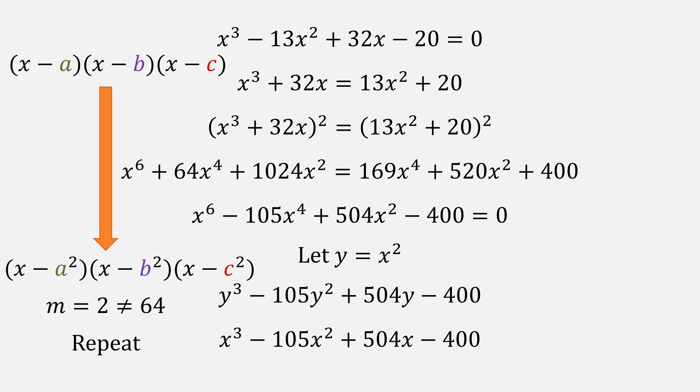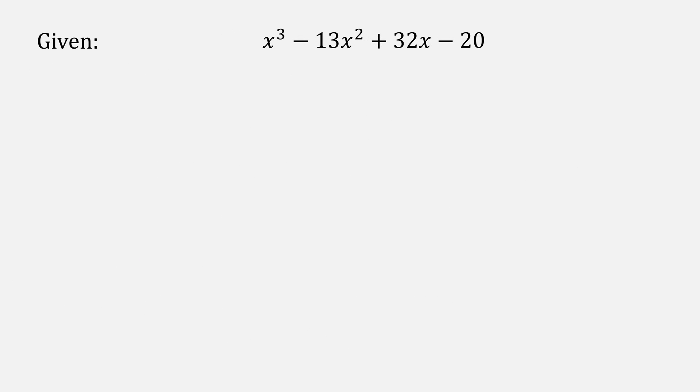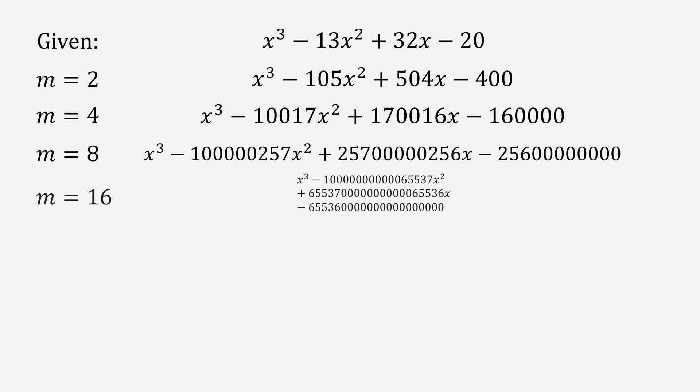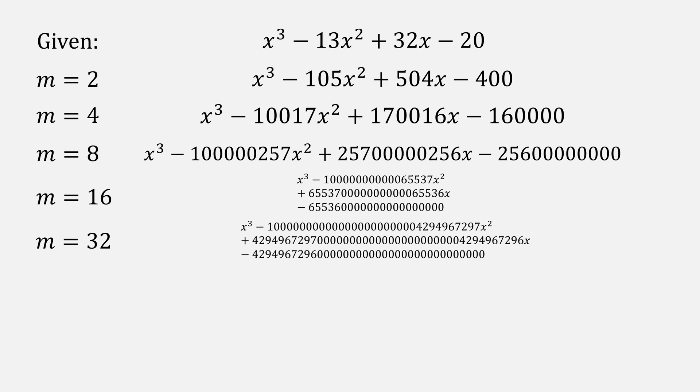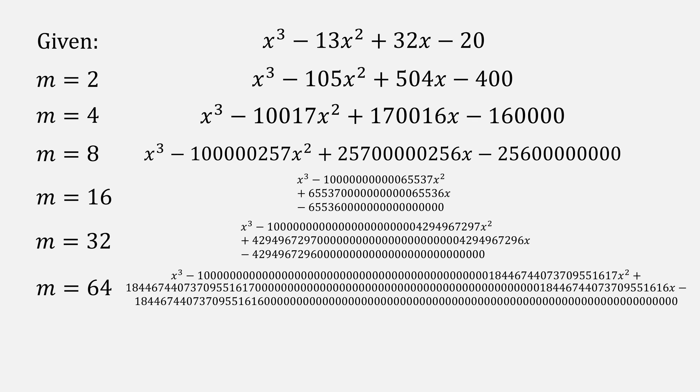That means we'll have to repeat this step a few more times. From our original polynomial we apply our root squaring to have m of 2 to come up with our second polynomial. Square that again to have m of 4, m of 8, m of 16, 32, and 64. That very long polynomial that we use to then solve for our roots.